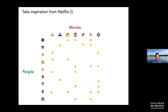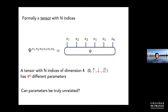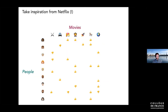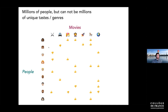We can take inspiration from Netflix — how do they tell us what movies we'd like when we haven't watched them? The key is they use something close to tensor factorizations. Millions of people have watched movies but only rated a small handful. We know there can't really be a million unique different tastes in movies.